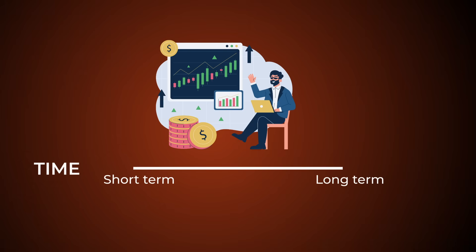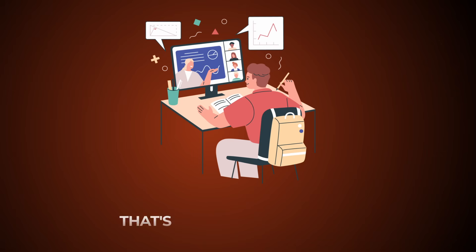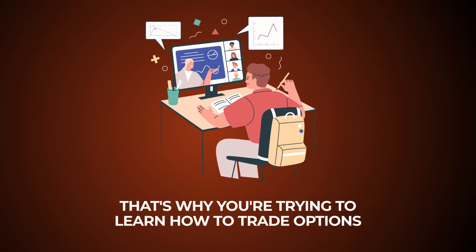So if you're going to hold shares for the long term, what financial advisors preach — buying and holding a mutual fund or something that follows the broad market like the S&P 500 — well, over time that's correct, it's going to make you money. But as you've heard me say before, you're just going to be average. And none of you want to be average. That's why you're trying to learn how to trade options.